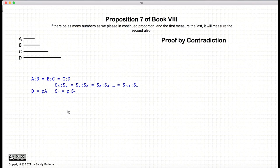So let's prove this. And we're going to prove this by contradiction. So we start off by assuming that A does not measure B, or that S1 does not measure S2.